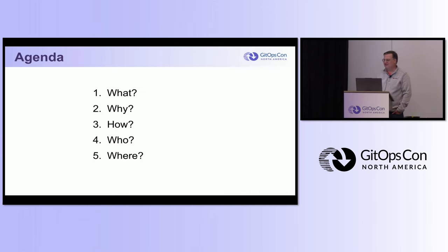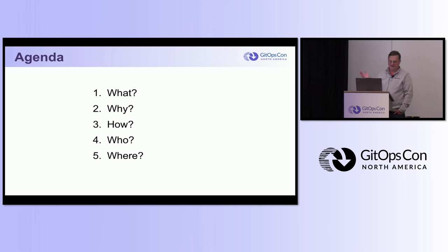Originally this was a lightning talk - 10 minutes - but I got asked to blow it out to 25 because one of the presenters had some visa issues. So in terms of the structure of this talk, I'm really following the four W's and an H: what are these things, why do you want to do them, how do you do them, who should care, and where can you do it upstream.